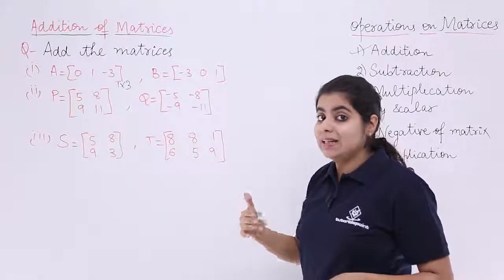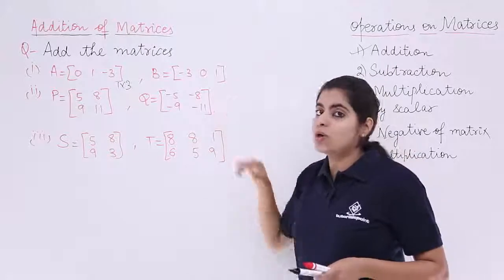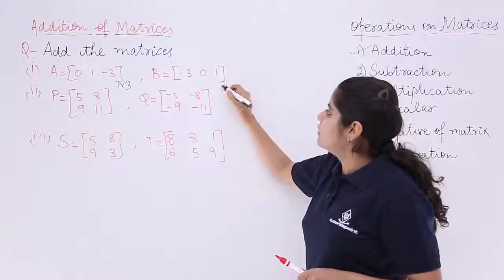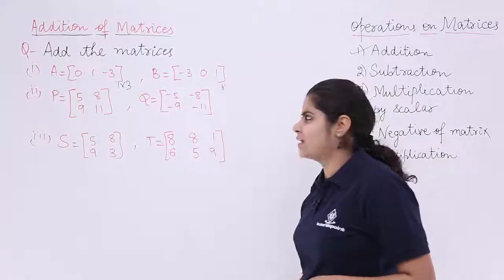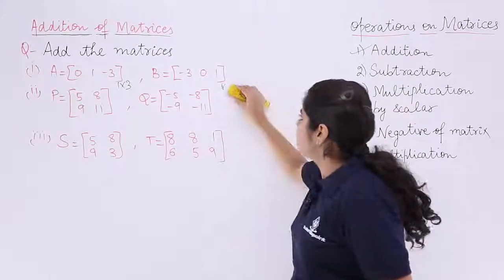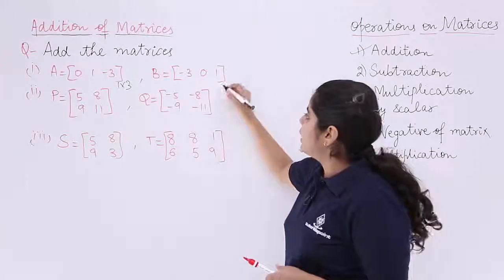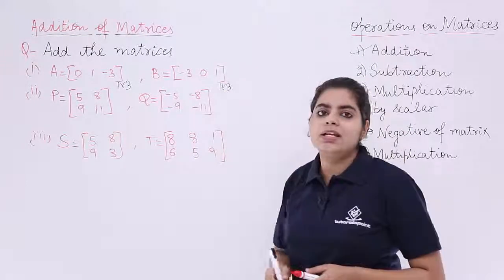What about the other matrix, matrix B? How many rows? One row. How many columns? Three columns. So, again it is 1 by 3. Let me write it more beautifully. It is 1 by 3. Both having the same order, 1 by 3, that means yes, the addition is possible.